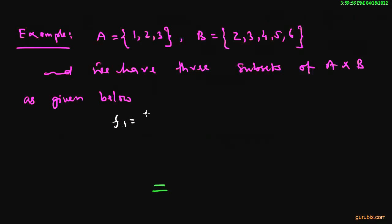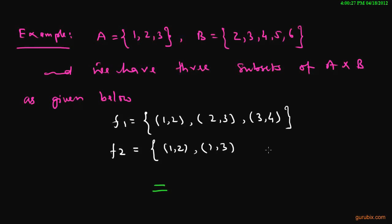Suppose F1 is a set of ordered pairs (1,2), (2,3), (3,4) and there is another subset of A cross B which is F2 with ordered pairs (1,2), (1,3), (3,4) and there is another subset of A cross B which is F3, a set of ordered pairs (1,2), (2,3).